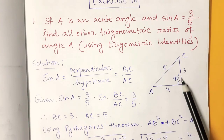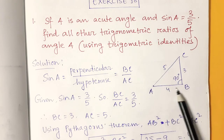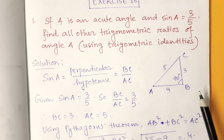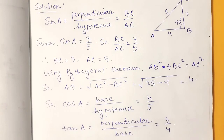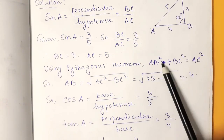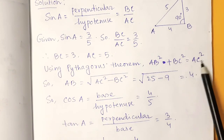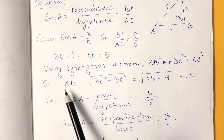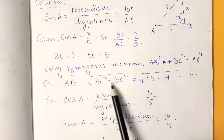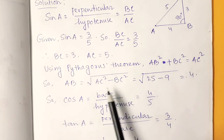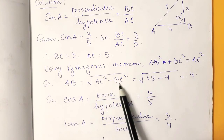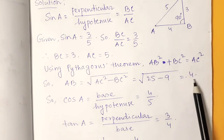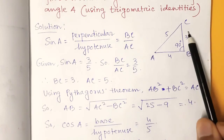We have BC and AC, so we need the value of AB. For that, we will use Pythagoras theorem: AB² + BC² = AC². From here, AB equals root over AC² minus BC². Putting in the values of AC and BC, it comes out to 4.